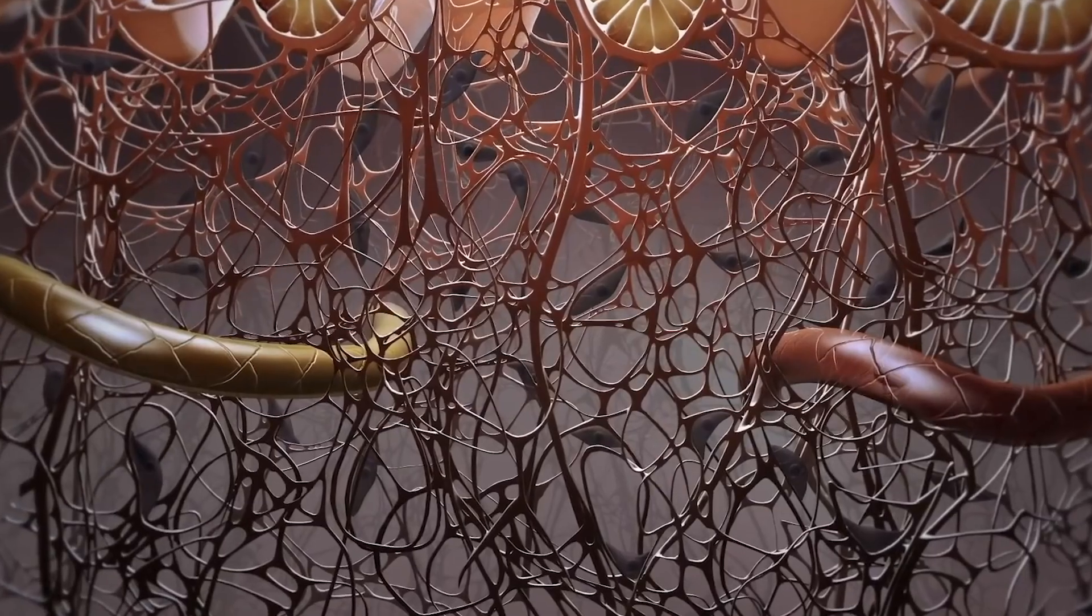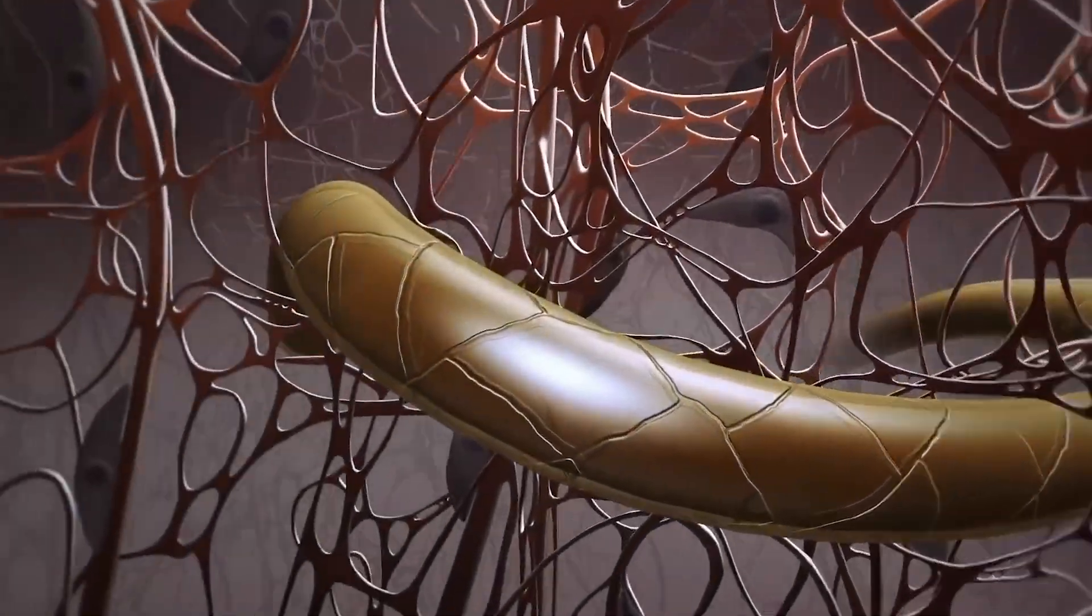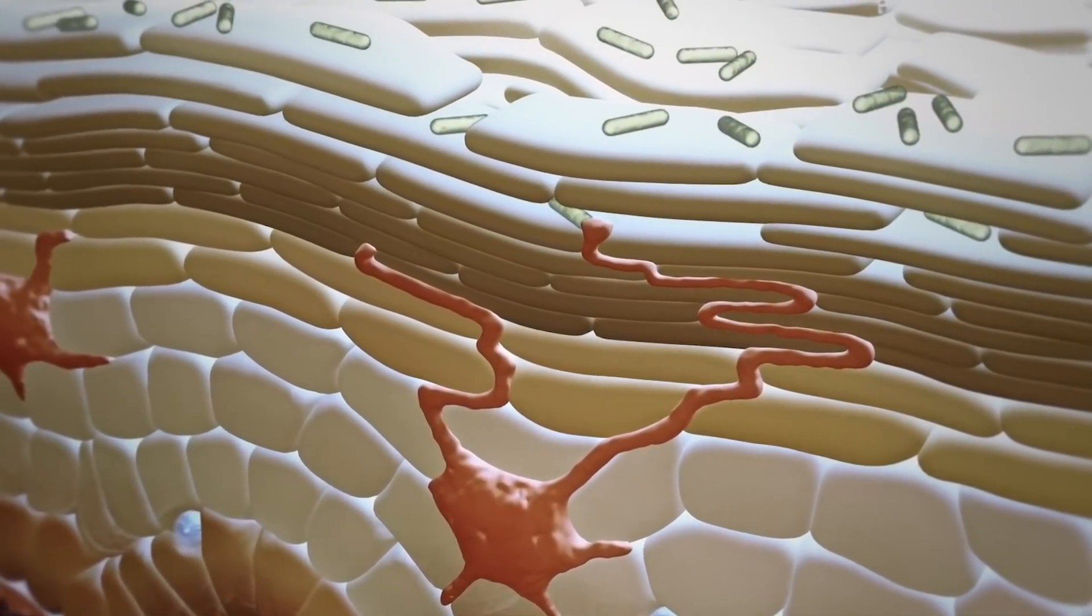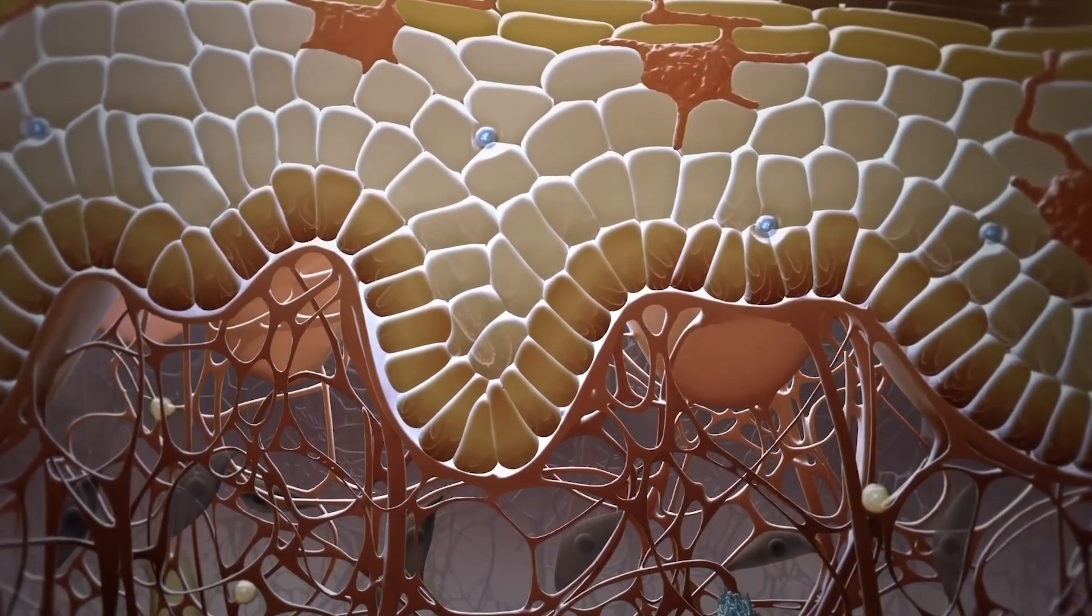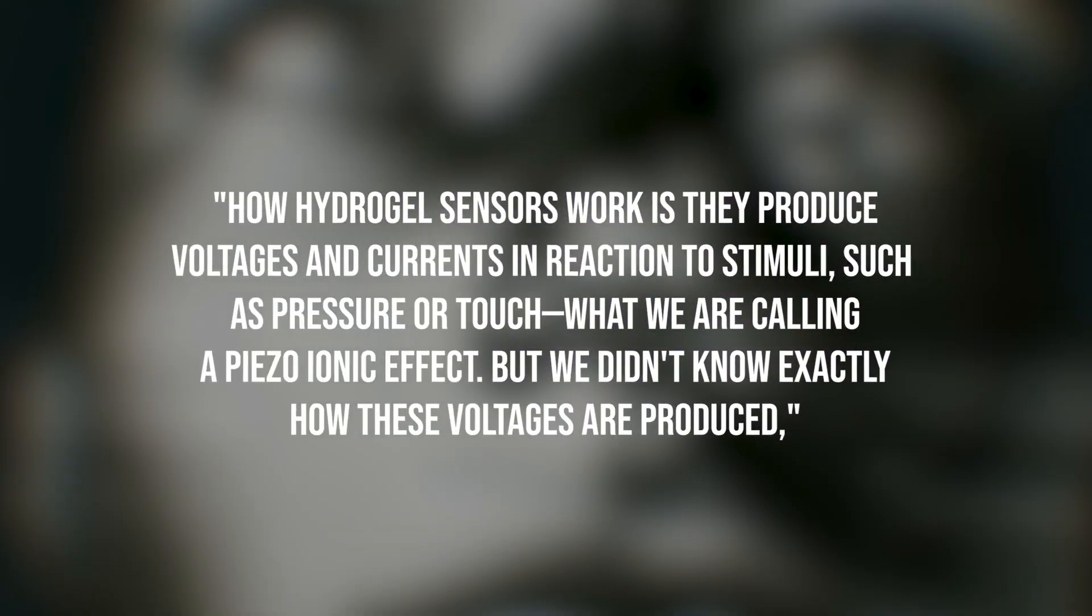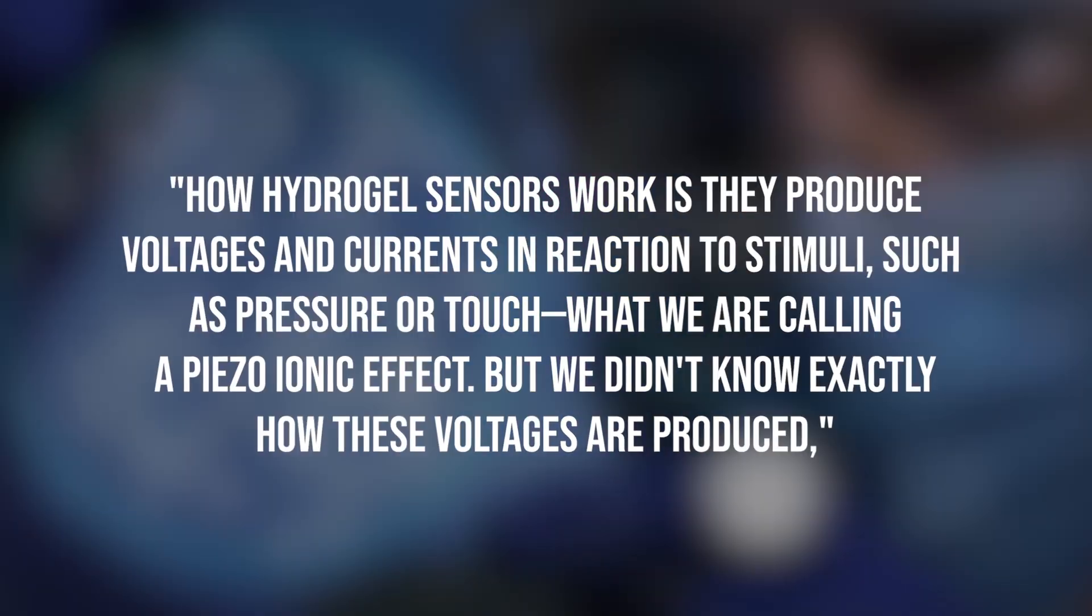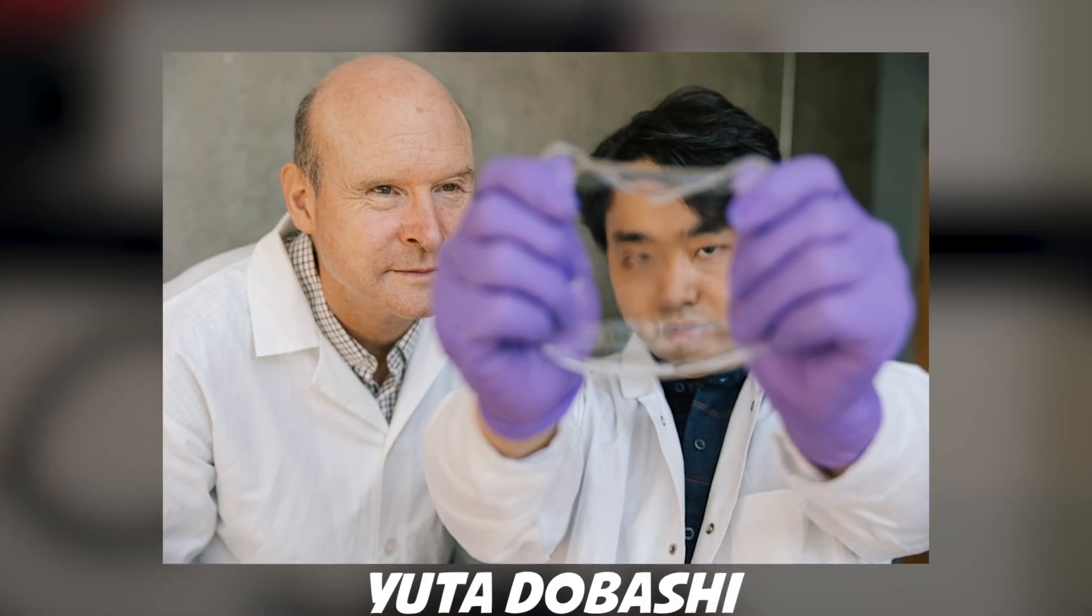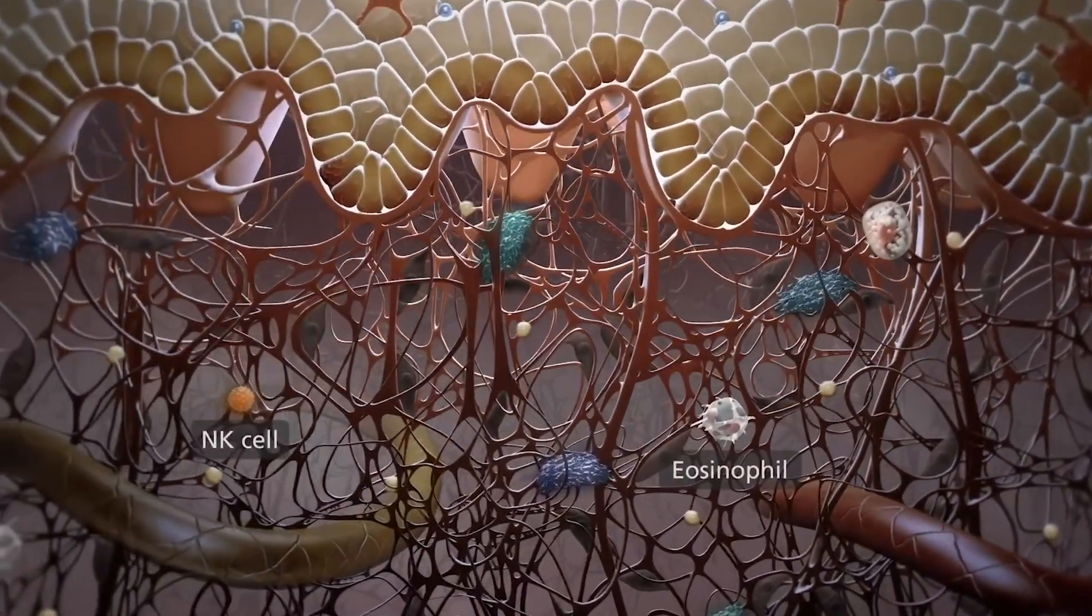These hydrogels can generate voltages when touched, but scientists did not clearly understand how, until a team of researchers at UBC devised a unique experiment published recently in Science. "How hydrogel sensors work is they produce voltages and currents in reaction to stimuli such as pressure or touch, what we are calling a piezoionic effect, but we didn't know exactly how these voltages are produced," said the study's lead author Yuta Dobashi, who started the work as part of his master's in biomedical engineering at UBC.